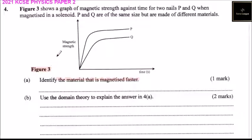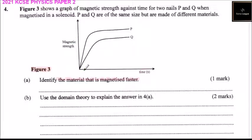Question number four. Figure three shows a graph of magnetic strength against time for two nails P and Q when magnetized in a solenoid. P and Q are of the same size but are made of different materials. The y-axis shows magnetic strength with time. A solenoid is a cylindrical coil of wire acting as a magnet when carrying electric current.